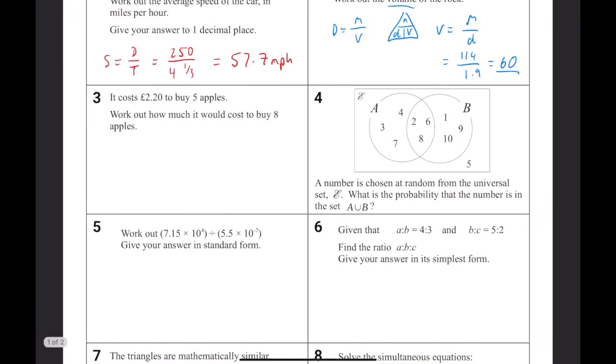It costs £2.20 to buy five apples. How much would it cost to buy eight apples? So five apples equals £2.20. So if you divide by five, one apple is therefore going to be 44p. So eight apples will be 8 multiplied by 44, which leaves you with £3.52.